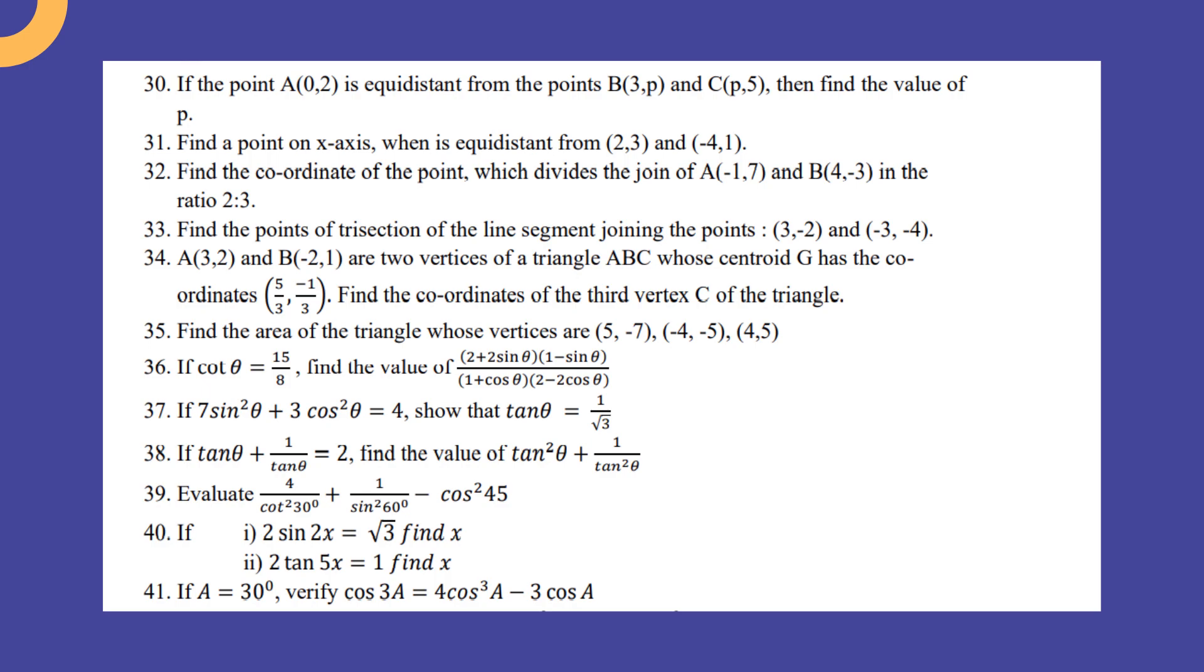A(3, 2) and B(-2, 1) are two vertices of a triangle ABC whose centroid G has the coordinates (5/3, -1/3). Find the coordinates of the third vertex C of the triangle.